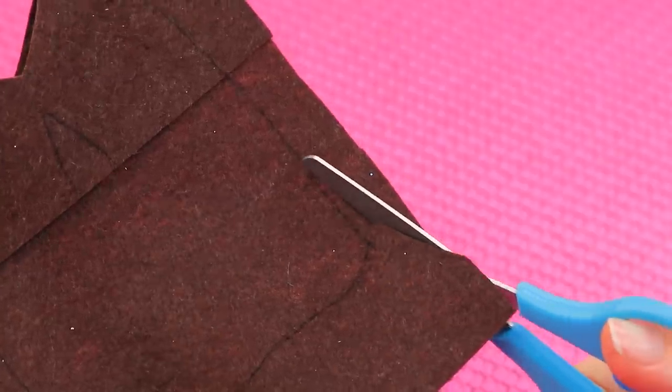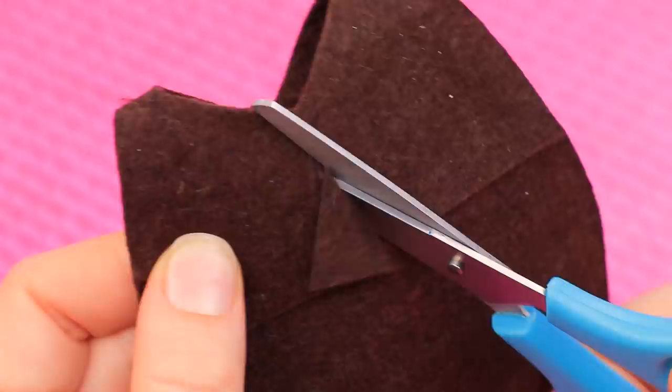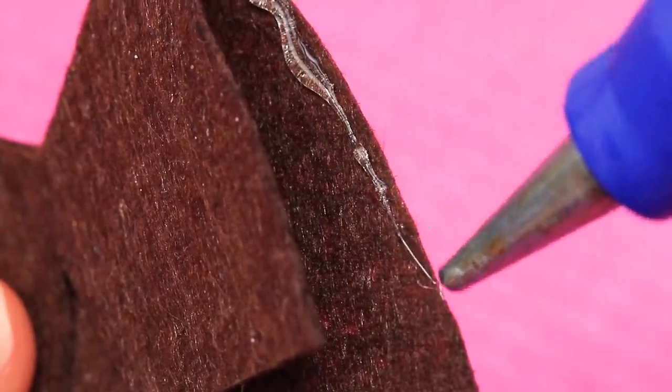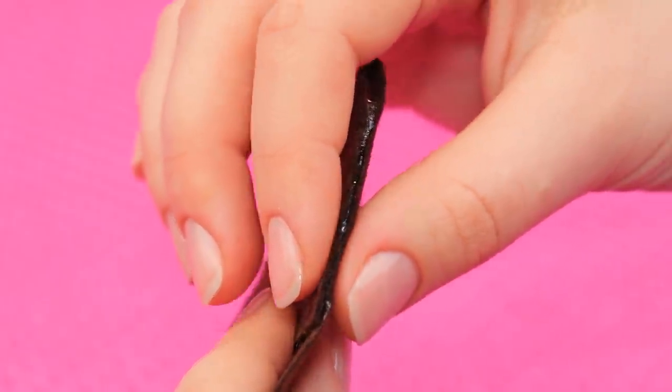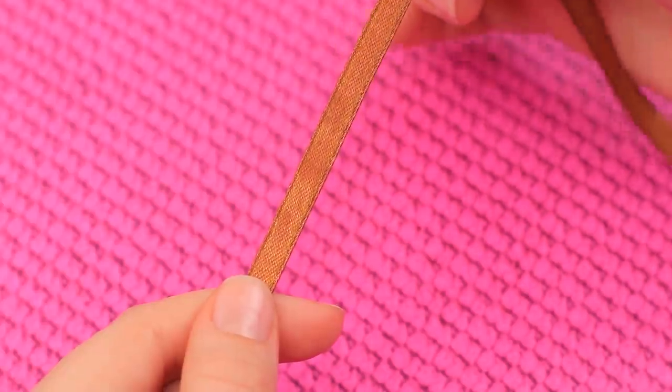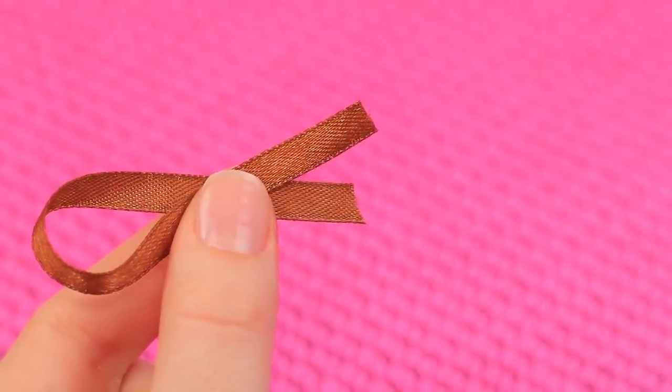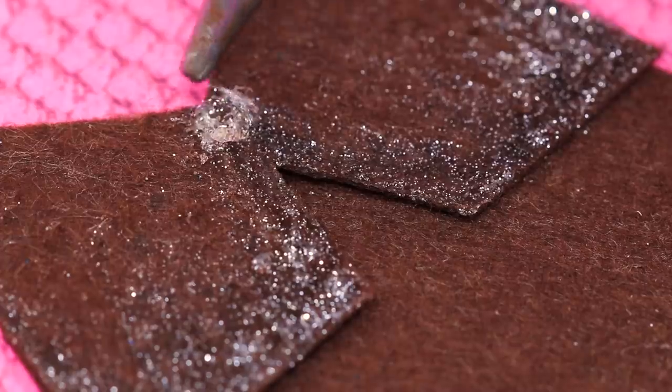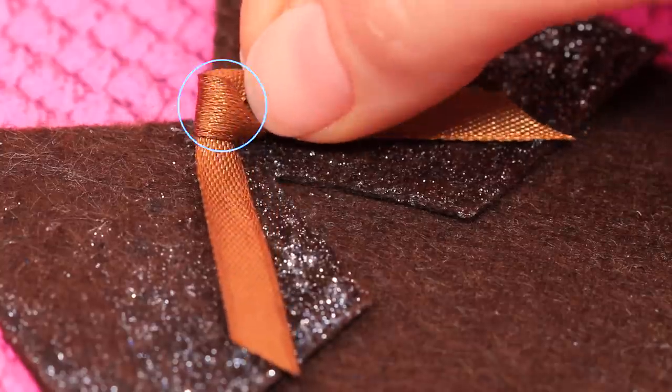Cut out the pieces. Hot glue the cape at the sides. Add some icy patterns with glitter glue. And the last detail! Take a satin ribbon and tie a knot. Hot glue it in the middle of the cape. Done!